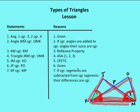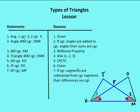Now I can say that JM is congruent to KO by CPCTC. I'm also given that segment JP is congruent to OP. Therefore, KP is congruent to PM, because if congruent segments are subtracted from congruent segments, their differences are congruent.